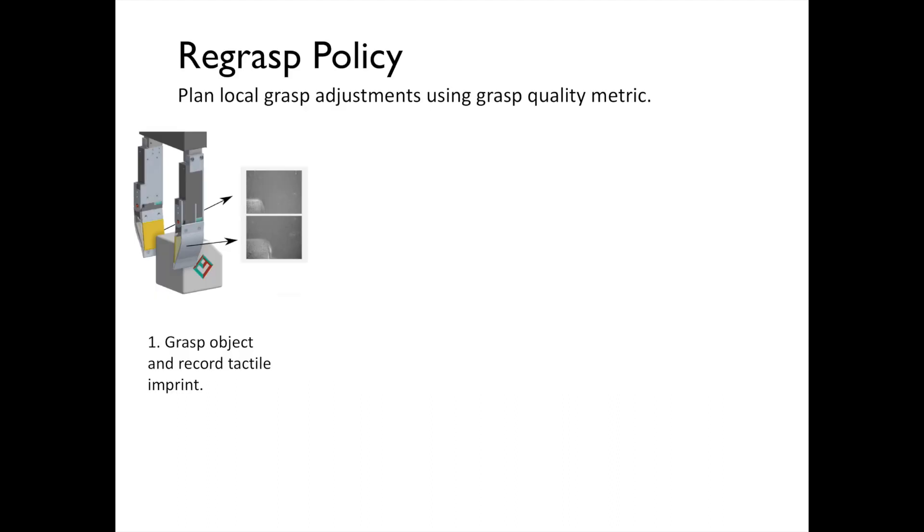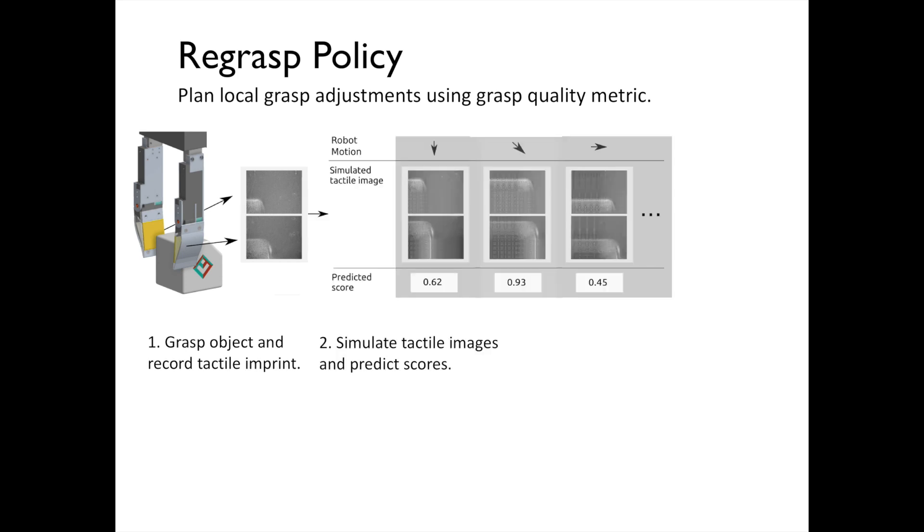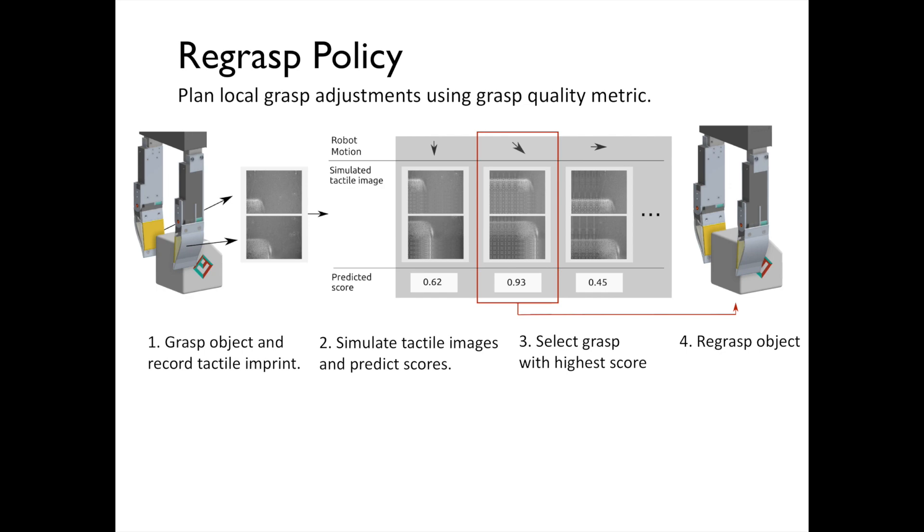The grasp quality network is then used to design a re-grasp policy that makes local grasp adjustments based on the tactile feedback. The policy works by sampling robot actions, simulating their associated tactile images, and predicting their grasp quality score. The grasp adjustment with the highest score is selected as the best re-grasp action.